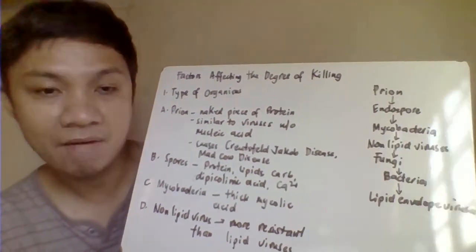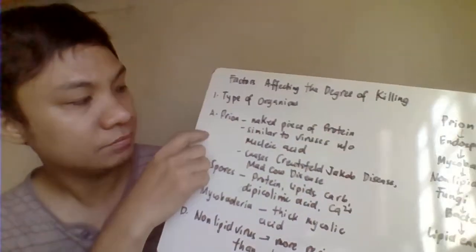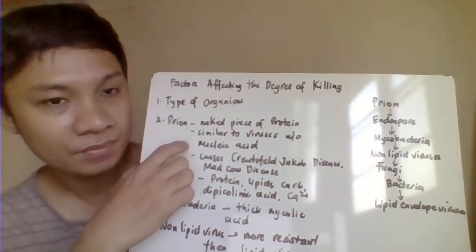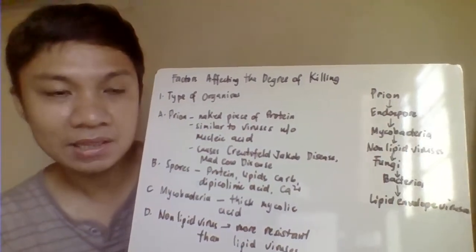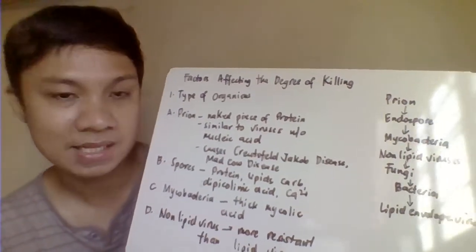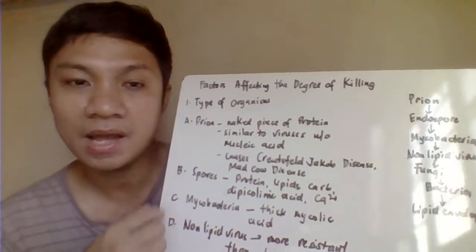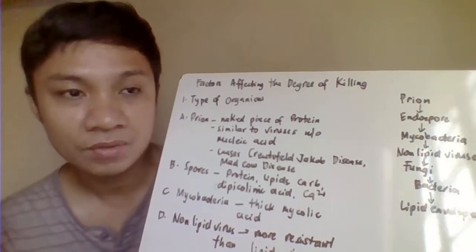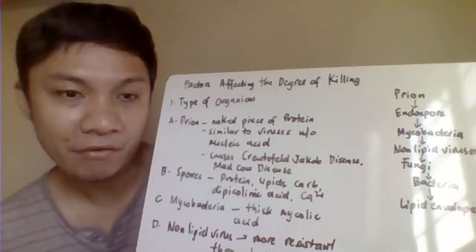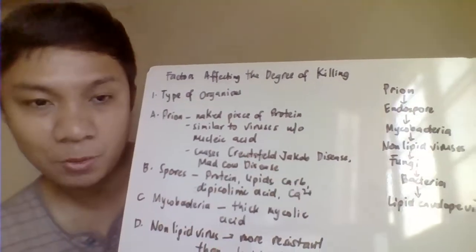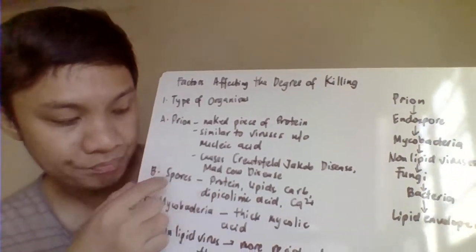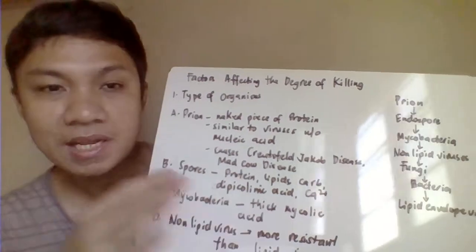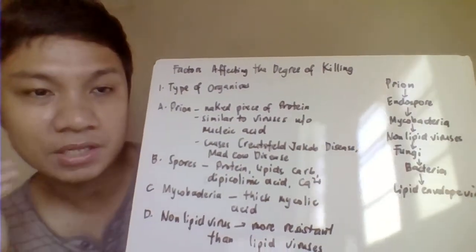The prion is a naked piece of protein — it resembles viruses but does not contain nucleic acid. Prions cause neurological disorders; they can damage the brain and affect the central nervous system. They are responsible for Creutzfeldt-Jakob disease and mad cow disease. Structures that are primarily protein-based are the most difficult to kill.